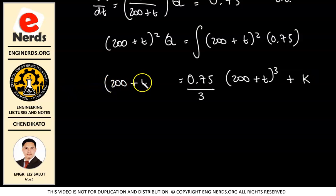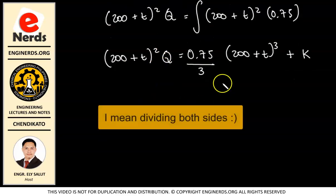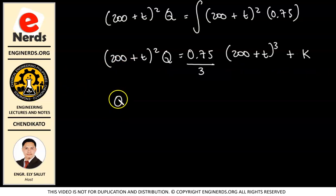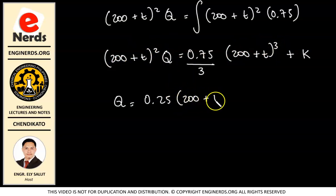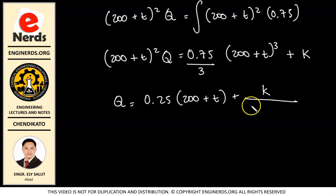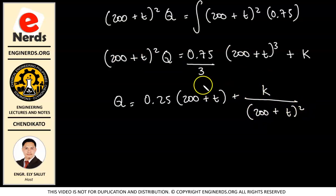Dividing both sides by (200+T)², we isolate Q: Q = 0.25(200+T) + K/(200+T)². Here 0.75 divided by 3 gives 0.25, and (200+T)³ divided by (200+T)² leaves (200+T). This is our general equation for the amount of salt at any time T.